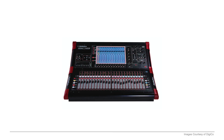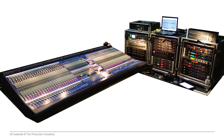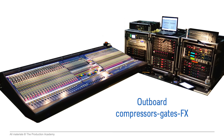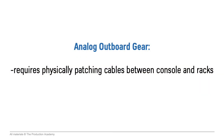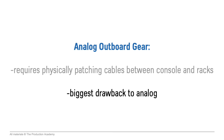This console still handles 48 inputs, provides compressors and gates on every channel, and has a ton of options for effects. In addition to the larger surface area, the compressors, gates, and effects for analog consoles are outboard, which means they have to live in separate racks and take up even more space. This also requires physically patching cables between the console and the racks, which is more work than digital consoles and is the biggest drawback to analog setups.